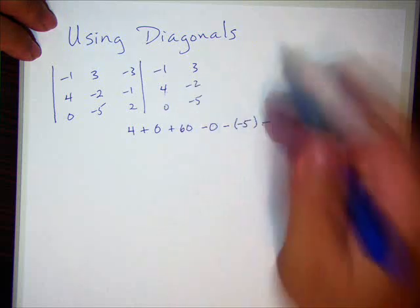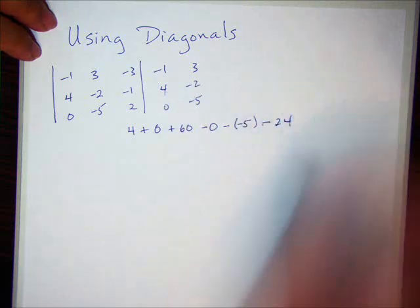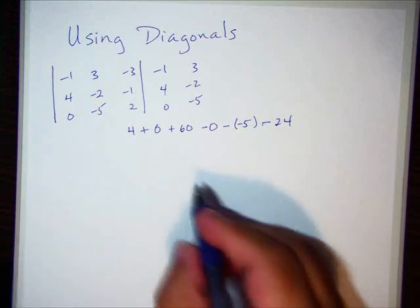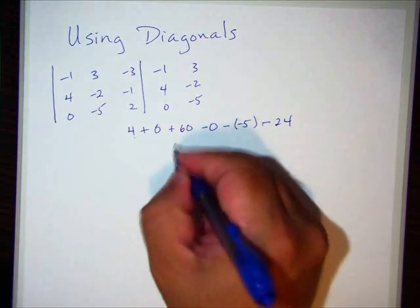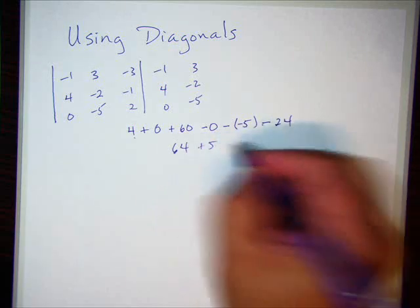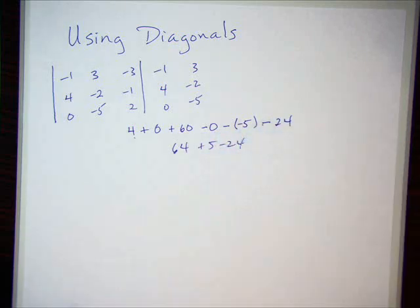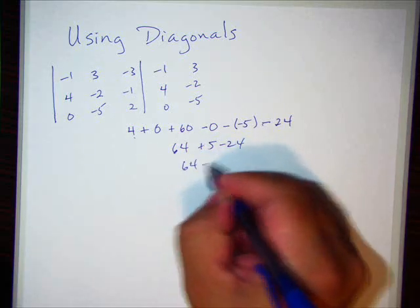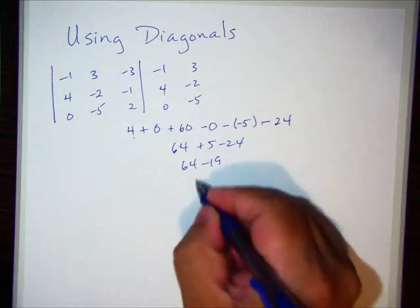And minus 2 times 4 times 3. That's going to be what? 24. So let's just simplify this. First three numbers, 64. That's a plus 5 minus 24. That's negative 19. And that becomes 45.